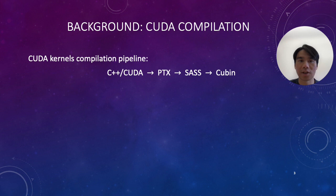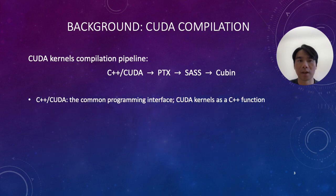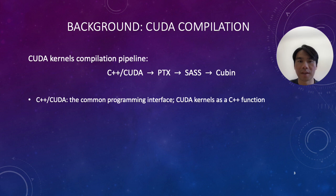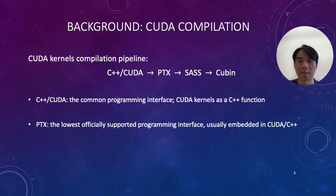These slides introduce the CUDA compilation pipeline. It consists of four stages. C++ CUDA is the most common programming interface, where CUDA code is written as a C++ function. This is where most people write specialized CUDA kernels. Then the CUDA code gets compiled to PTX, which is an intermediate assembly and is GPU architecture independent. It is also possible to directly program in PTX and embed it in C++ CUDA code.